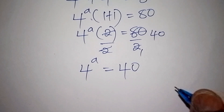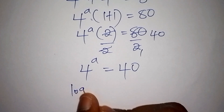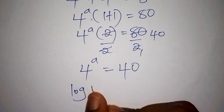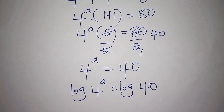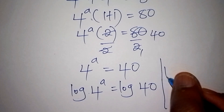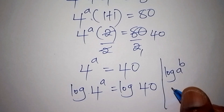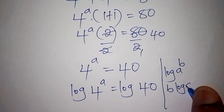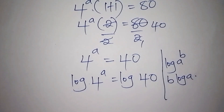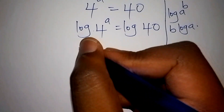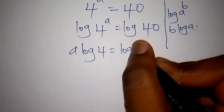Now, how do we solve for the value of a? The easiest approach is to take the log of both sides. So we shall have log of 4 to the power of a is equals to log of 40. We know that log of a to the power of b can be written as b times log of a. So log of 4^a can be written as a times log of 4.